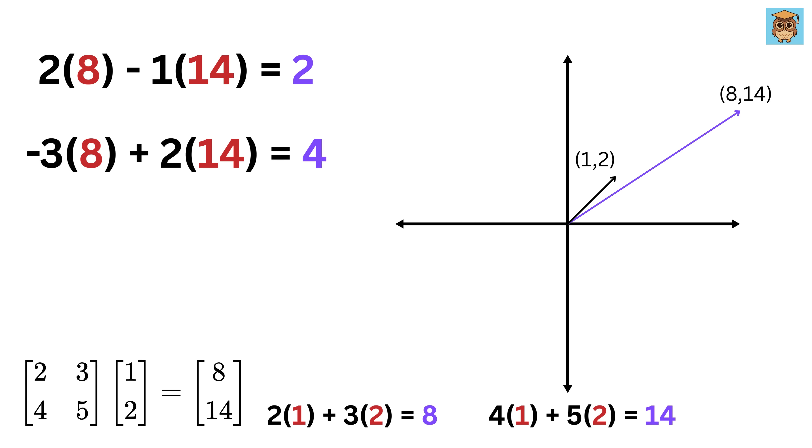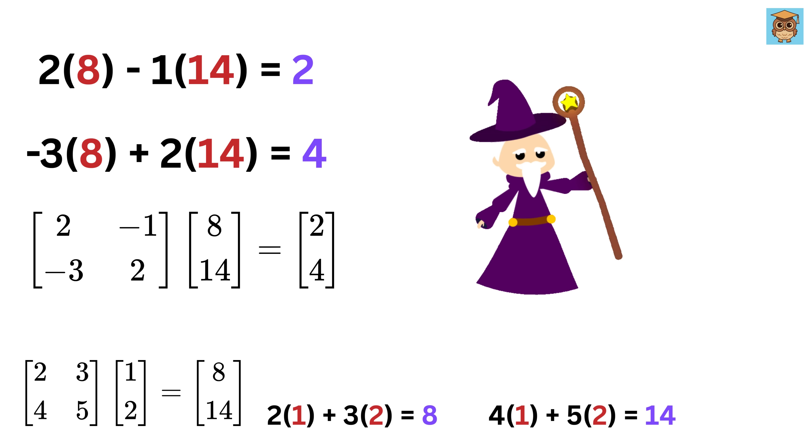So, observe carefully, like we did before. We can rewrite these expressions nicely using a matrix and a vector to get another vector like this. We again performed a transformation on this vector using this matrix to get another vector 2 and 4. Now, you might ask, so what? What's the big deal here? Here comes the magic.